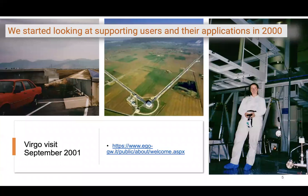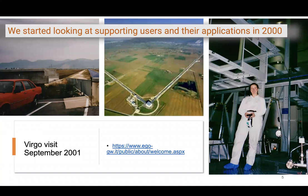We started looking at how to support scientific users back in 2001. This is a picture of Virgo at that time — you can see how old the cars looked. Virgo is one of the gravitational wave observatories that collects data near Pisa in Italy, hoping to detect gravitational waves — and they did. If the wave comes through this instrument, they have two-kilometer arms with masses suspended in them. If the wave passes through, you see small changes in the shape of those suspended masses. Then you do a lot of data analysis to figure out if it's a real gravitational wave signal or some other phenomenon like a seismic wave.